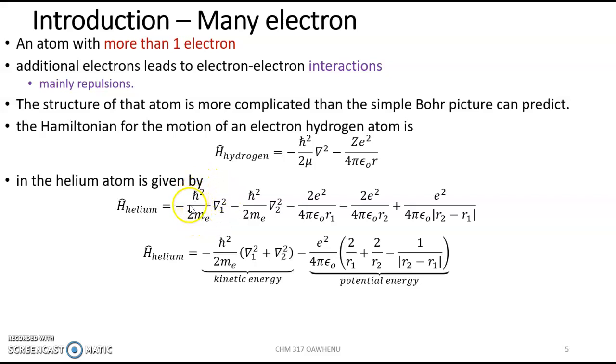We have the kinetic energy for electron one. The helium atom has two electrons. Kinetic energy for electron two. Potential energy for the attraction between electron one. If we look at this expression, that's the potential energy of attraction.